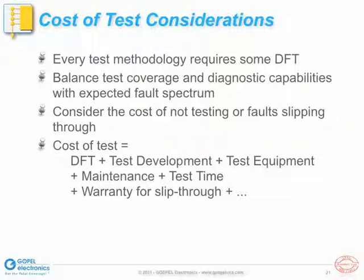When looking at boundary scan, the test equipment is typically very inexpensive and low maintenance compared to other automated test equipment. The test time is also usually very short. But since boundary scan is focusing on the test of digital circuitry, there is still the need to test the analog and mixed signal parts of the unit under test, and the actual at-speed function of the unit under test by some other means. The goal is to find the most efficient test strategy, one that provides the best overall test coverage achievable at a cost that makes economic sense for the product we are building.